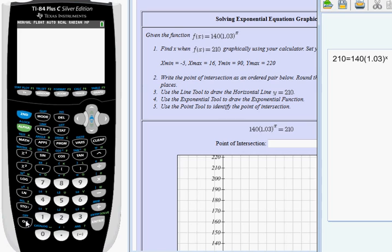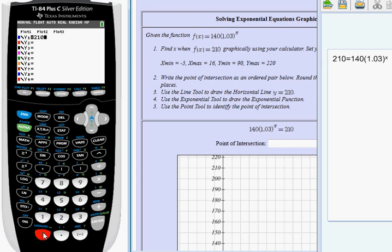Turn your calculator on, clicking the on button. You should see a cursor. Click the y equals in the upper left-hand corner. I'm going to type in 210 as my first equation, so 210. You can either press enter or you can down arrow to the next line.